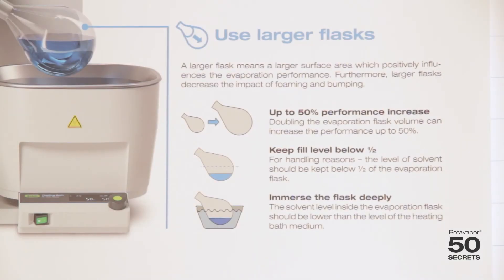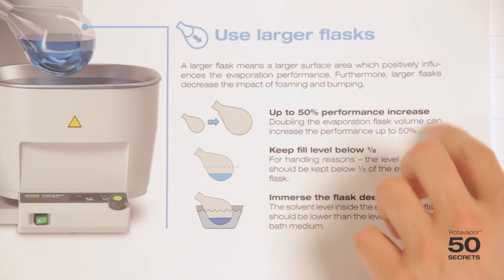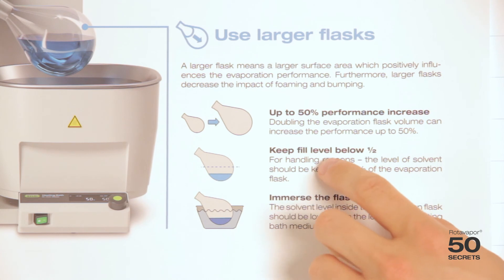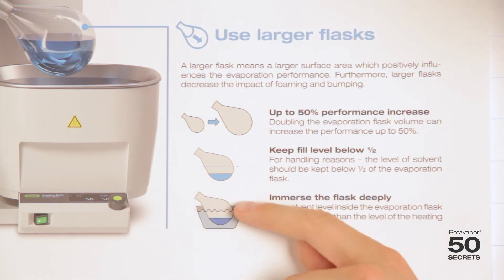The fifth secret is about using larger evaporating flasks. It's very important that this can impact the performance quite dramatically. You should keep the fill level below one half and you should make sure that the flask is immersed deeply into the heating bath.